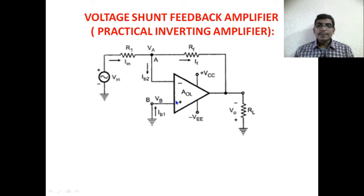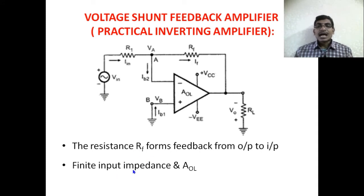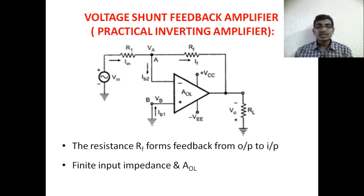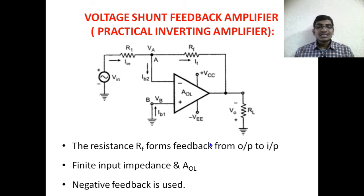The resistance RF forms the feedback from the output to the input. The amplifier has a finite input impedance and open-loop gain AOL. In the ideal case the input resistance of the operational amplifier is infinite, but when feedback is applied we obtain a finite value of input impedance. The open-loop gain also becomes finite. The feedback used here is negative feedback because it is connected to the inverting terminal of the operational amplifier.